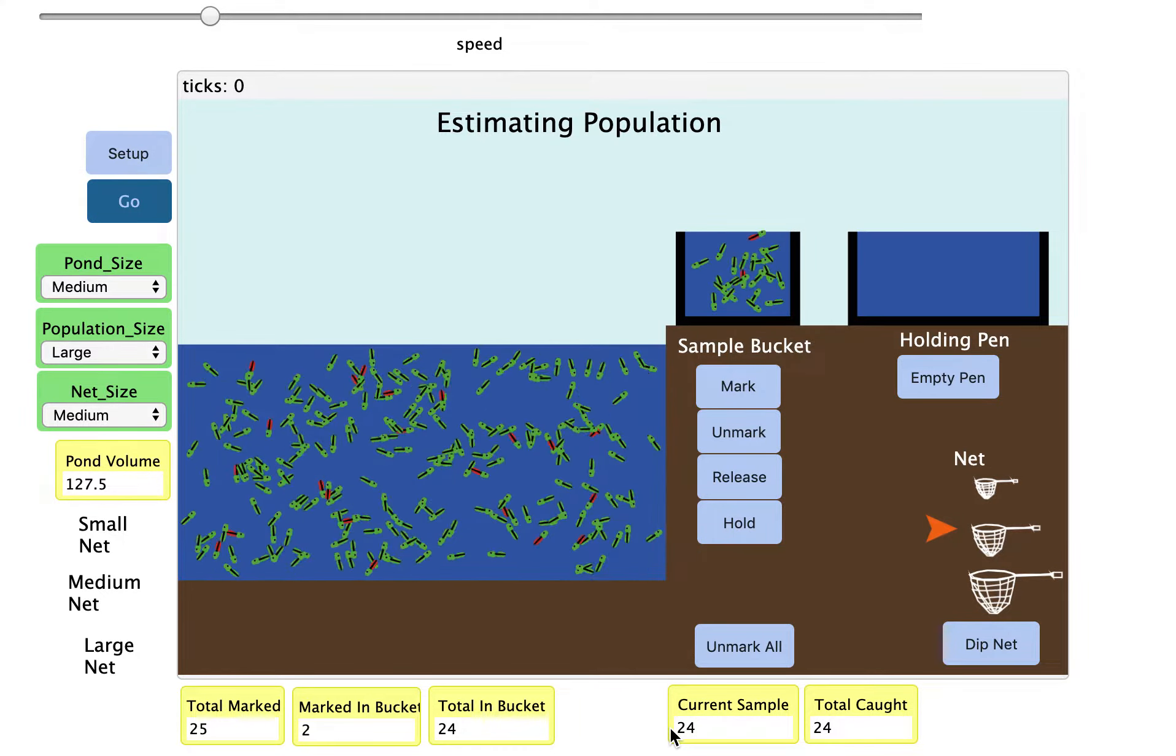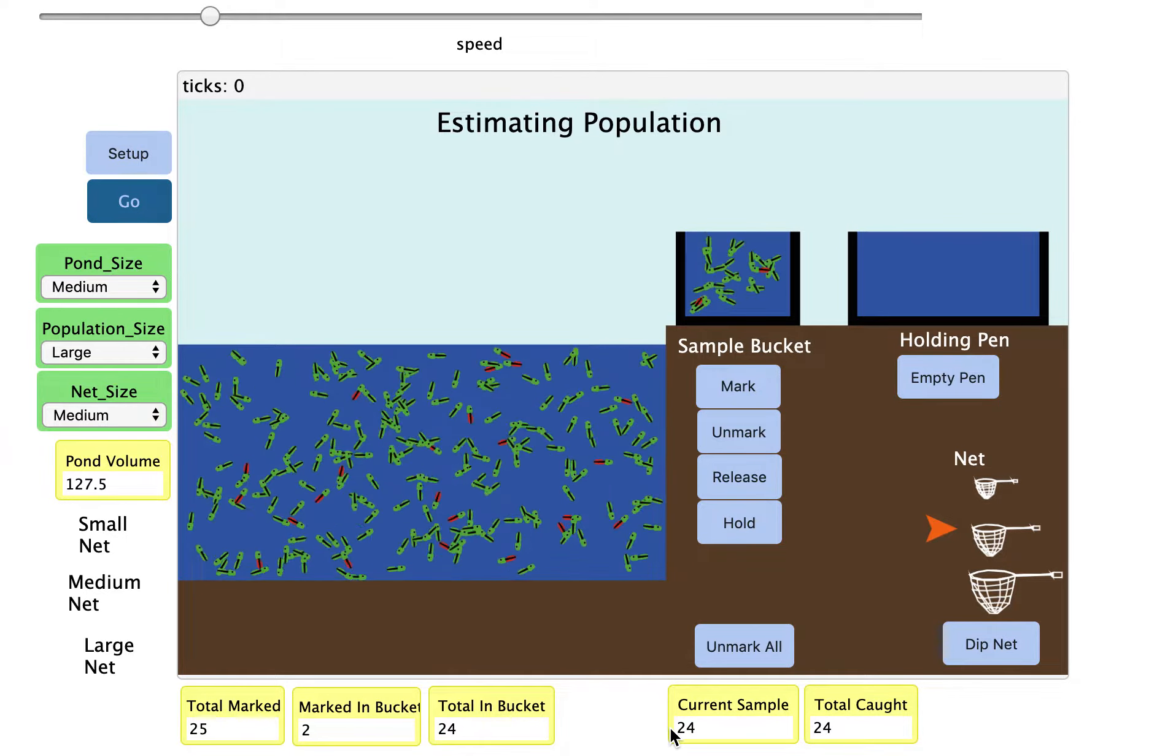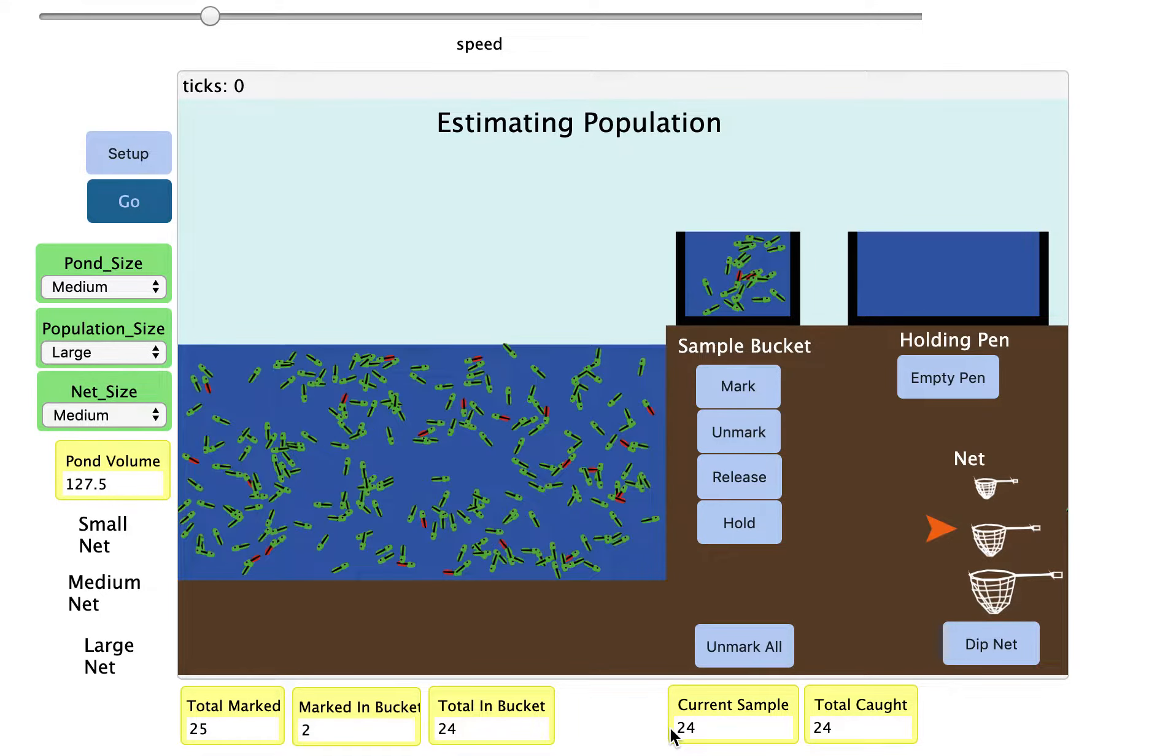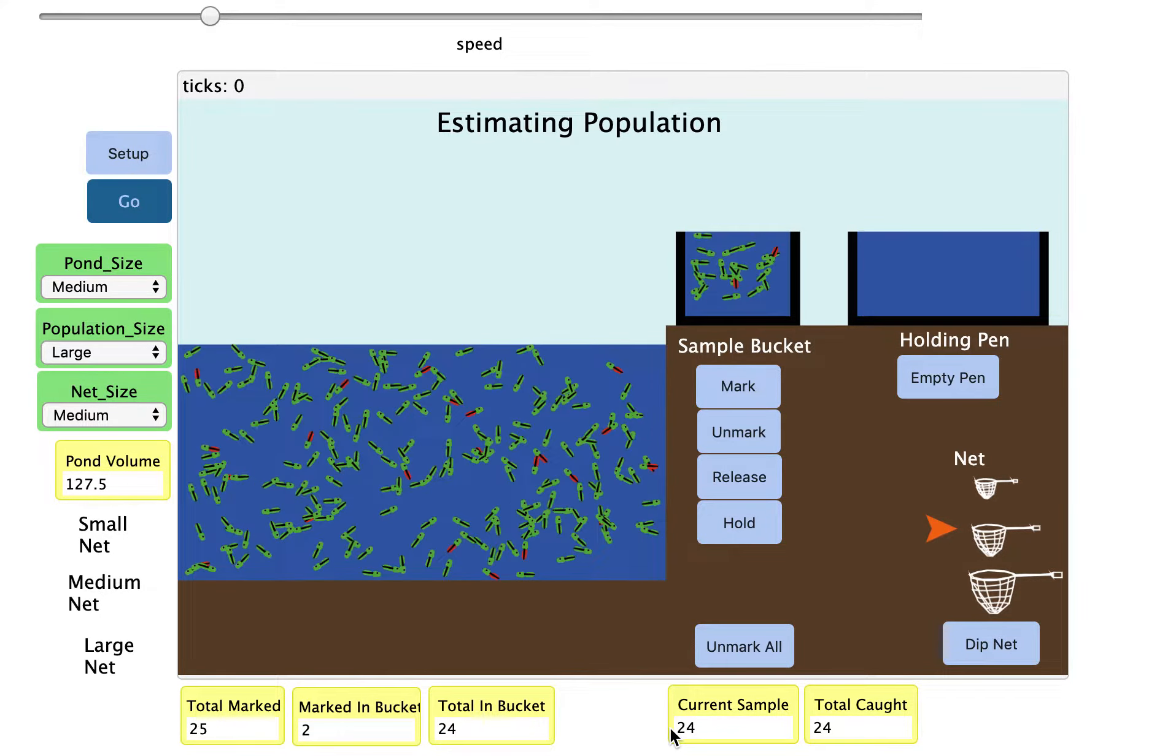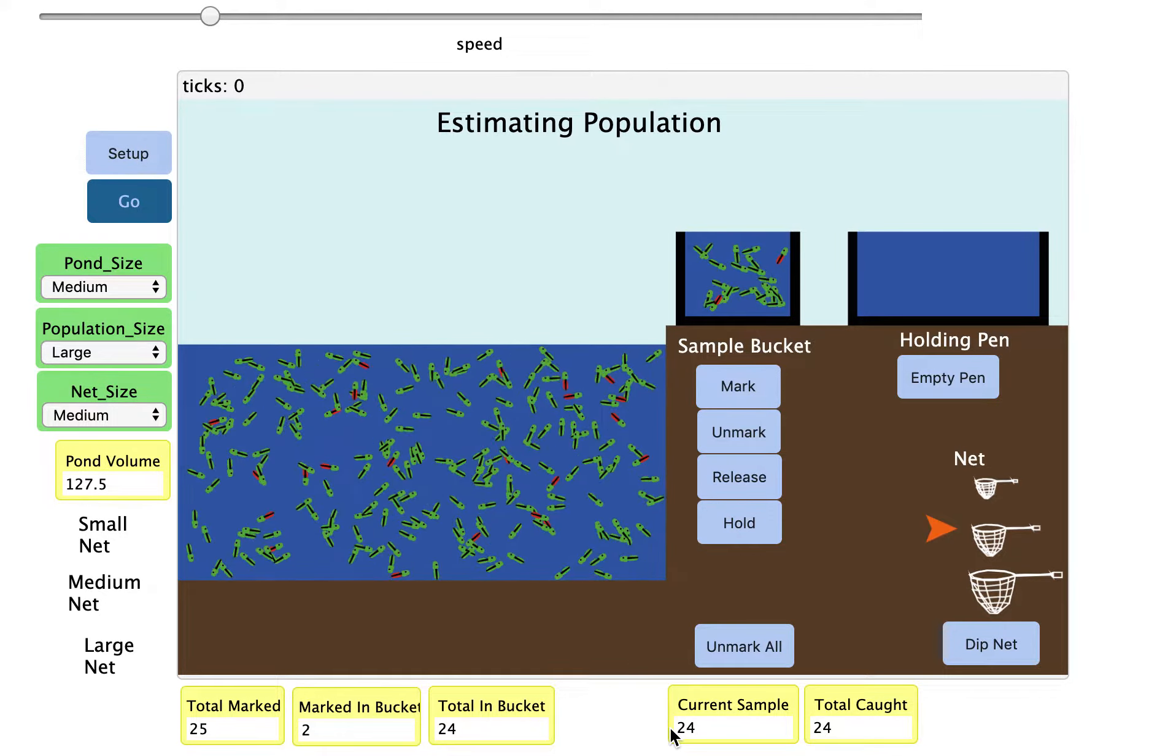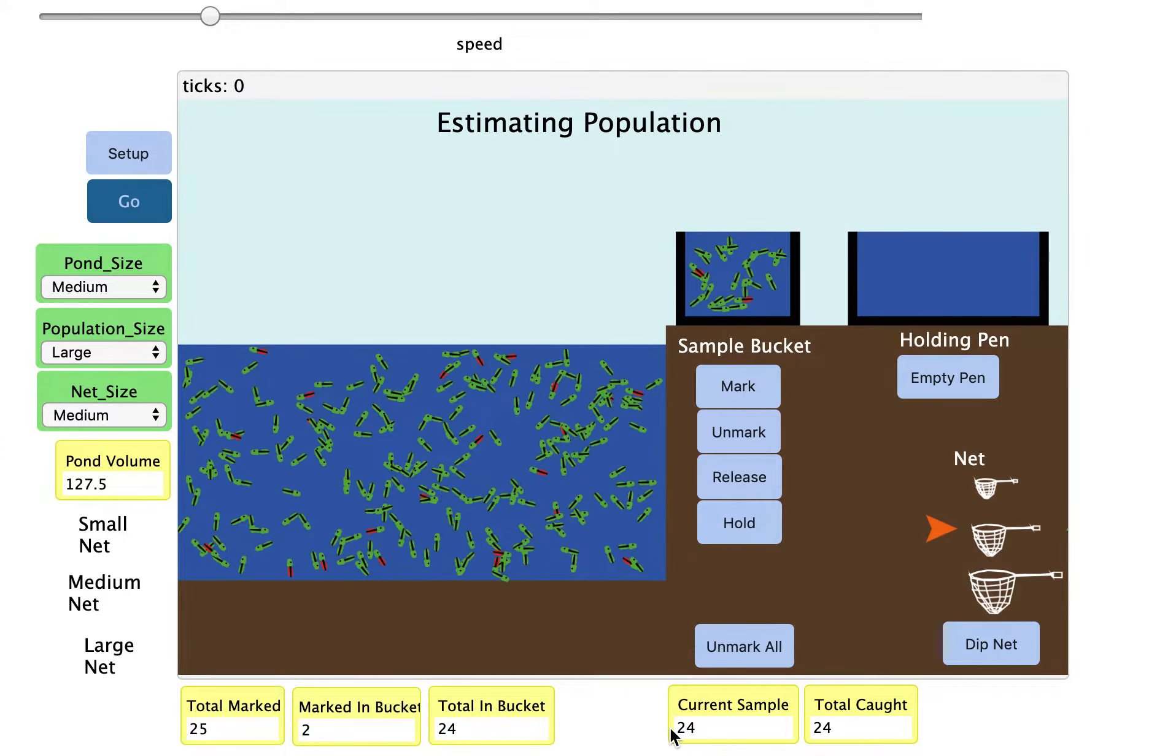So this is my first sample size, our small sample size. In that current sample there are two fish that are red. Now we know two fish out of the 24 in our sample are red.